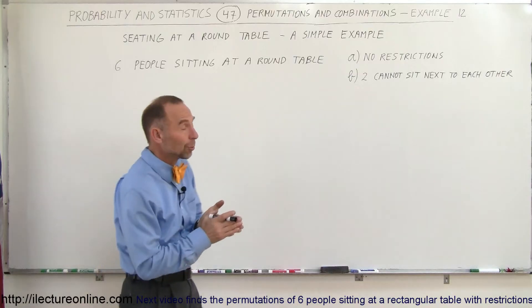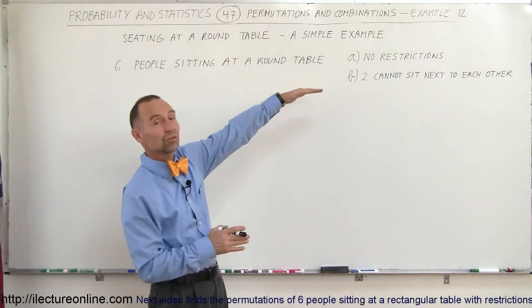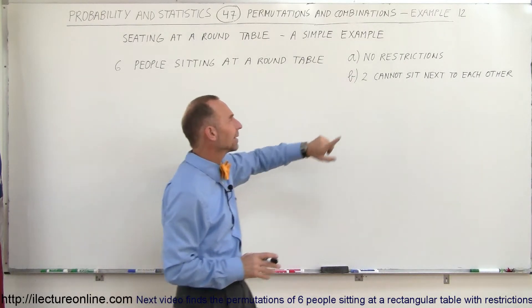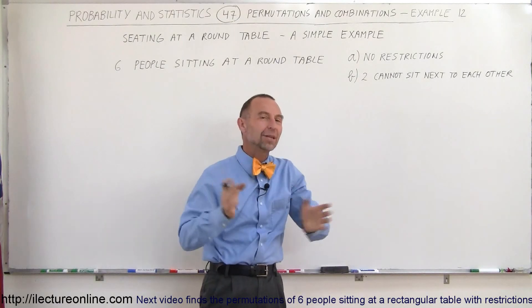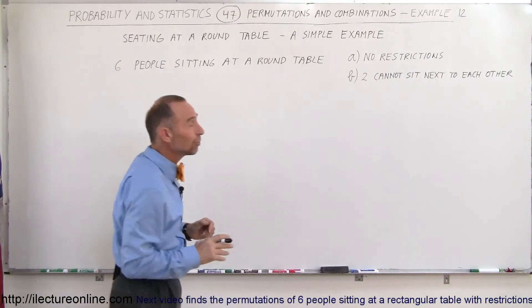First of all we're going to find out the number of permutations if there are no restrictions at all, and then we're going to find the case where two of the six people cannot sit next to each other. How many different permutations of seating arrangements do we have now?